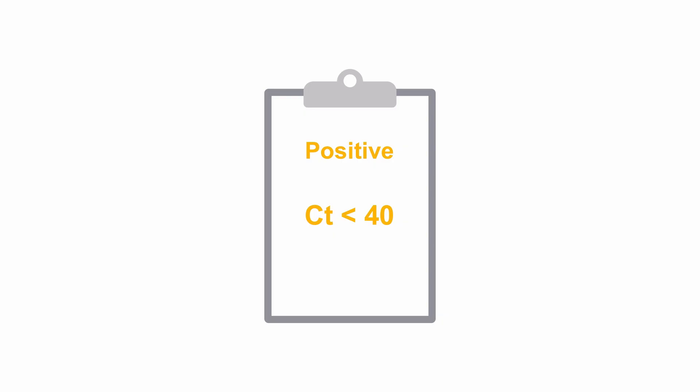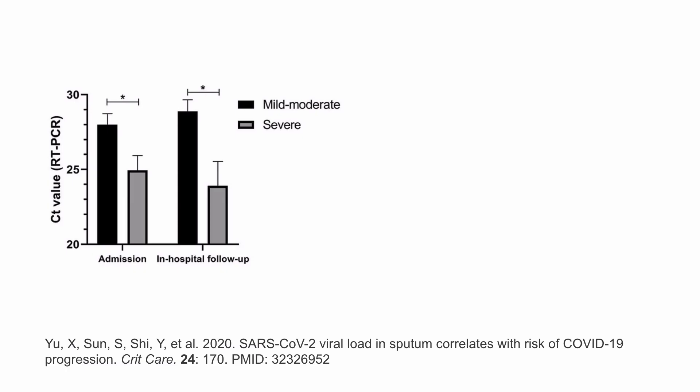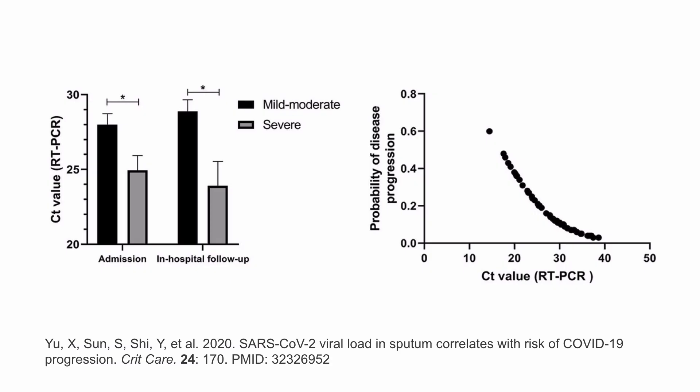Several studies have shown that viral load as measured by CT value can help predict disease progress. For example, this study of hospitalized patients showed that those who developed more severe disease had lower CT values on their initial RT-PCR test on admission than those who developed more mild disease. They also showed that the probability of disease progression correlated with the CT value on admission.